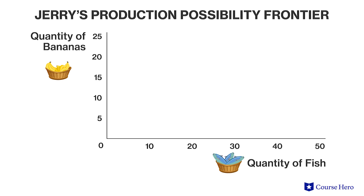While the slope of the PPF contains information about the trade-offs Jerry faces, the endpoints also provide useful information. One endpoint of the PPF will show the maximum number of fish Jerry can catch if he allocates all of his time to catching fish and zero hours to gathering bananas. The other endpoint shows the maximum number of bananas that can be gathered if he spends all of his time gathering bananas and spends no time catching fish. While the endpoints show the extremes, if Jerry wants to consume both goods each day he can't spend all his time at the endpoints.